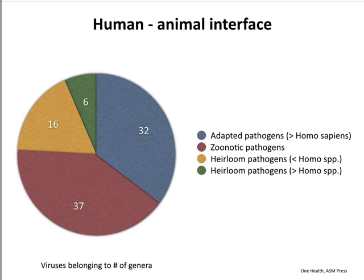This pie chart shows the source of viruses that currently infect people, illustrating how important our interactions with animals are. These are numbers of genera represented by different virus infections. The blue part represents 32 different genera — what we call adapted pathogens — circulating among people who don't need reintroduction from animal sources. They joined us after we were Homo sapiens. The purple represents 37 genera we consider zoonotic pathogens, which always have to jump from an animal into humans, including Nipah, Hendra, Ebola, and Marburg.